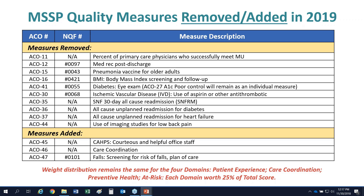New measures include expanded CAHPS — courteous and helpful office staff, CAHPS care coordination, and a risk of falls assessment. The weight distribution for the four categories of Shared Savings quality metrics remains the same, with each category weighted at 25% of your overall score.